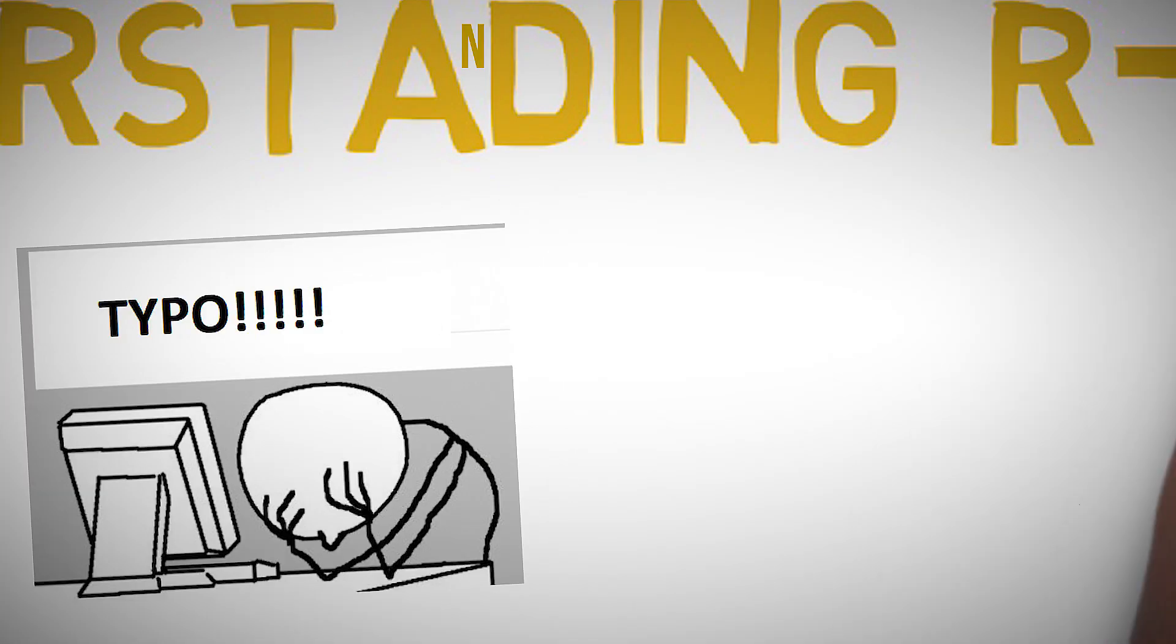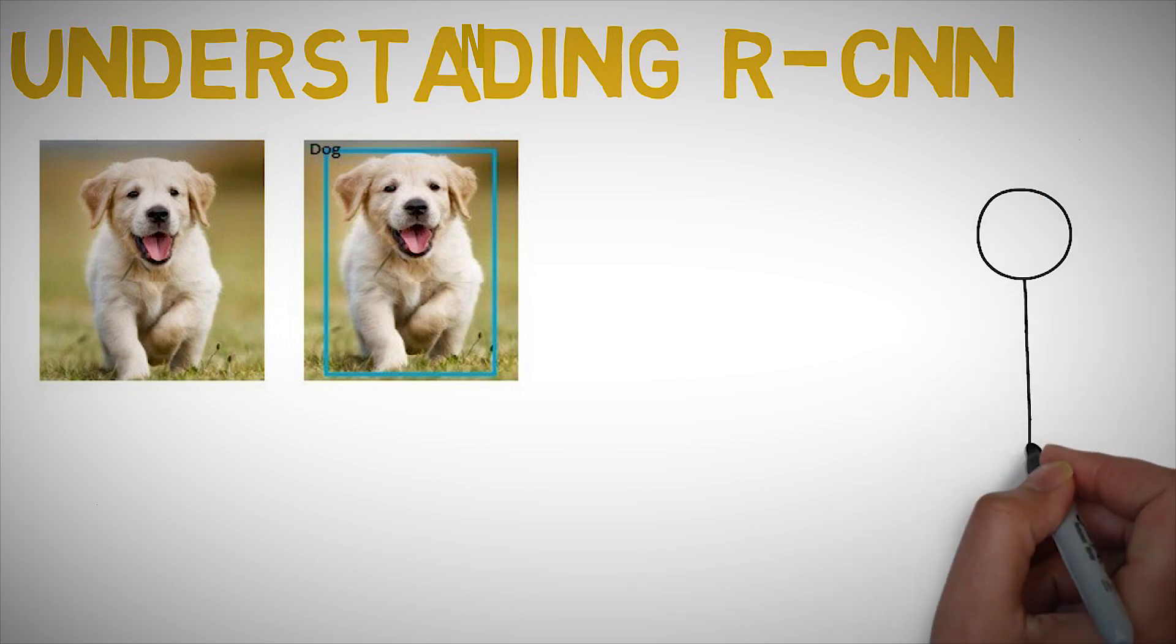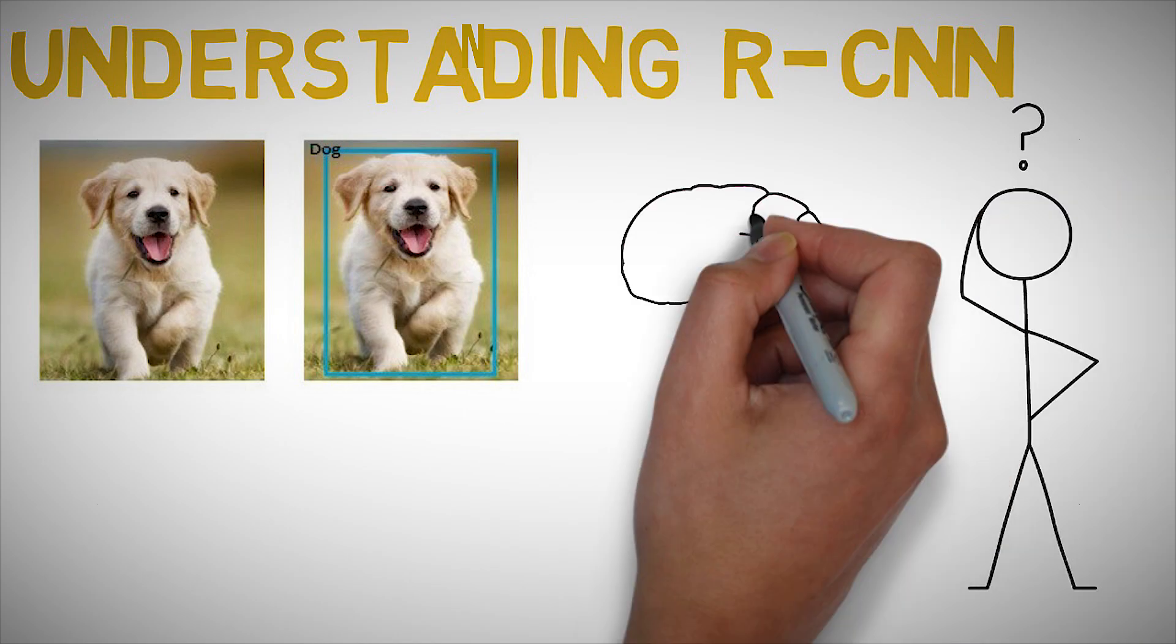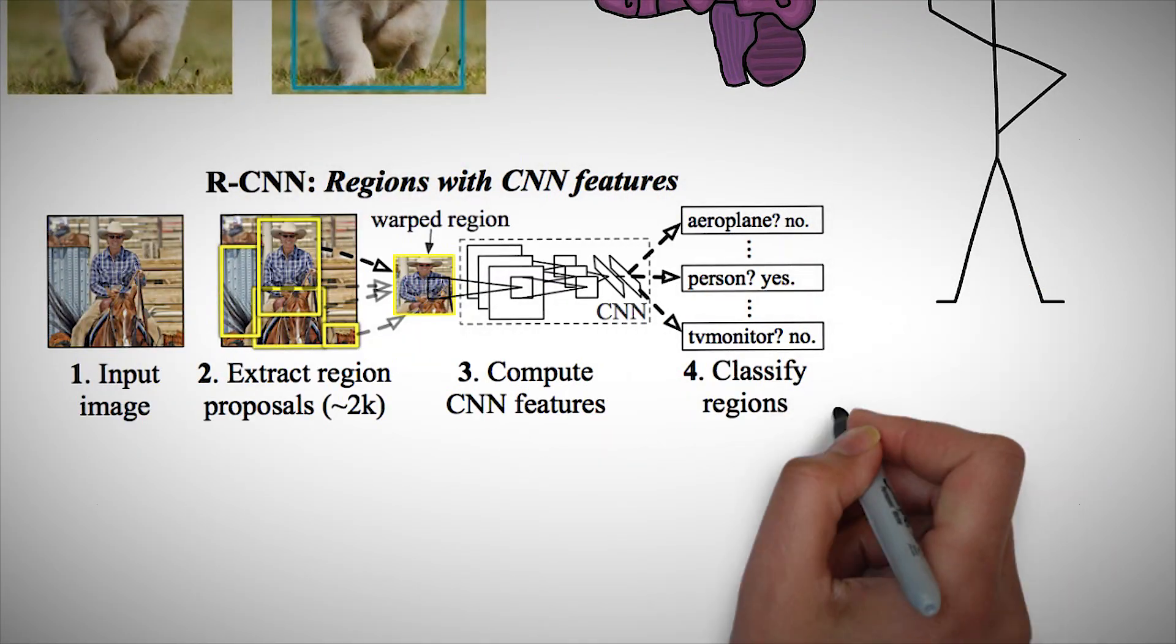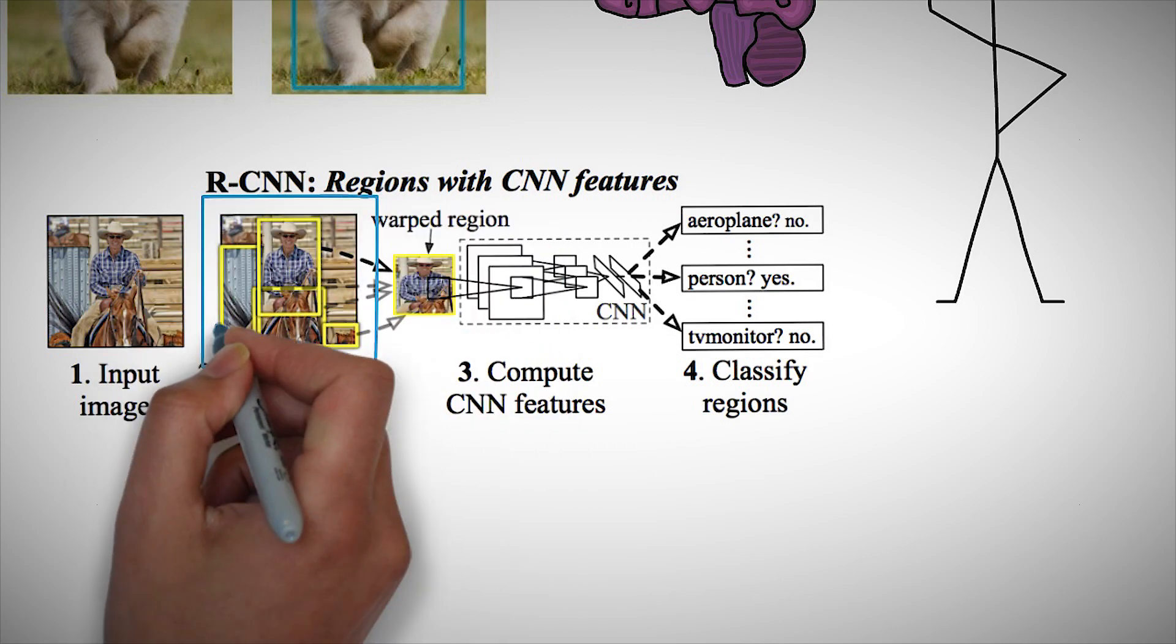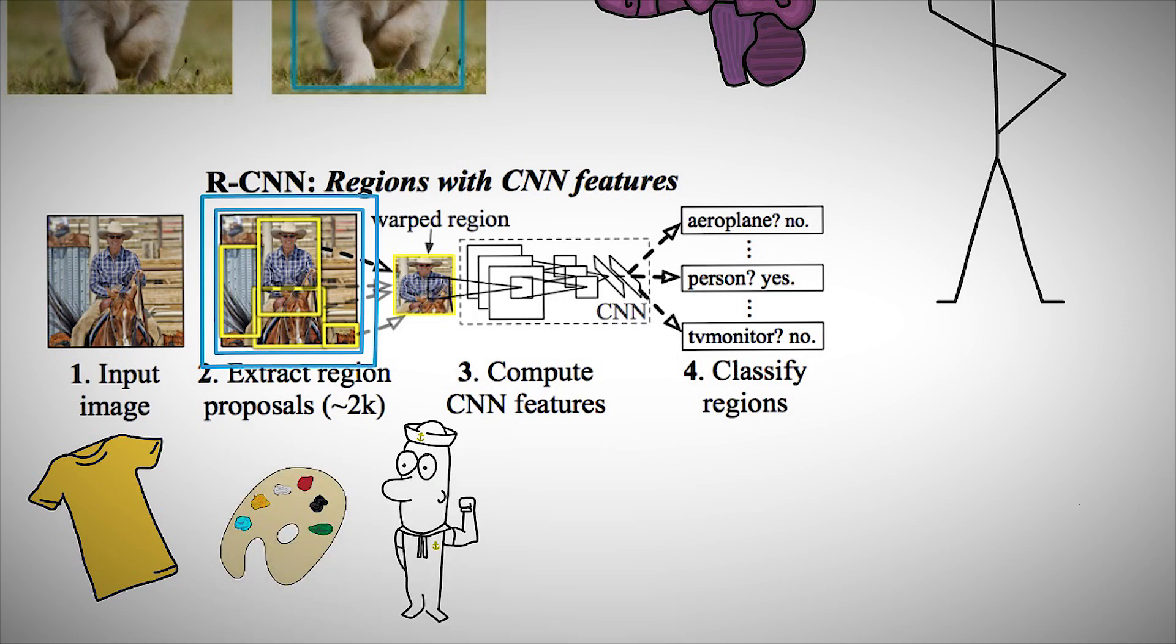Understanding R-CNN. So the goal of R-CNN is to take in an image and correctly identify where the main objects via a bounding box are in the image. So the inputs are the image and the outputs are the bounding boxes plus labels for each object in the image. But how do we find out where these bounding boxes are? R-CNN does what we might intuitively do as well: propose a bunch of boxes in the image and see if any of them actually correspond to an object. R-CNN creates these bounding boxes or region proposals using a process called selective search. At a high level, selective search looks at the image through windows of different sizes and for each tries to cluster together adjacent pixels by texture, color, or intensity to identify objects.